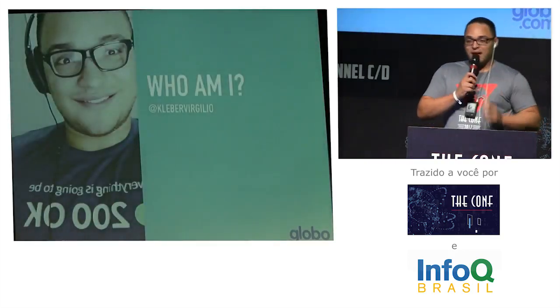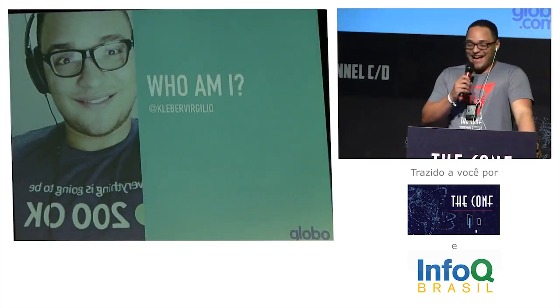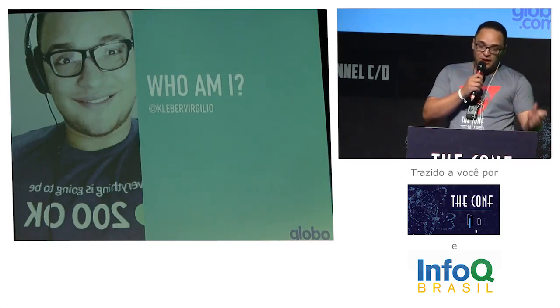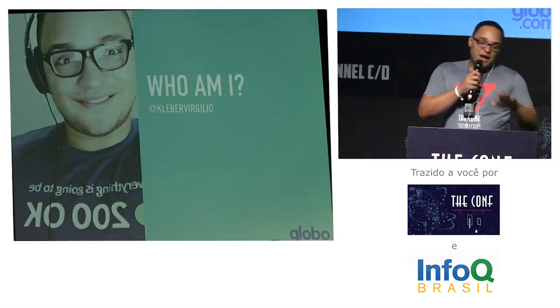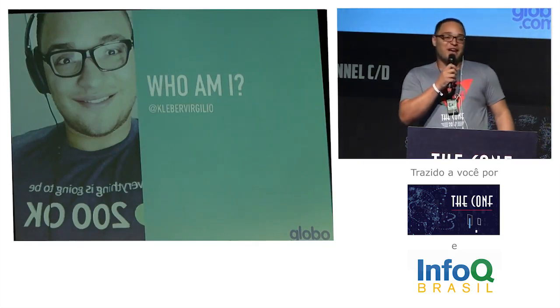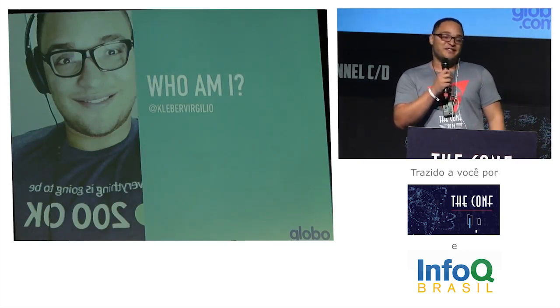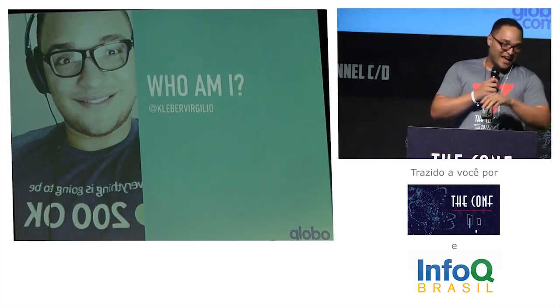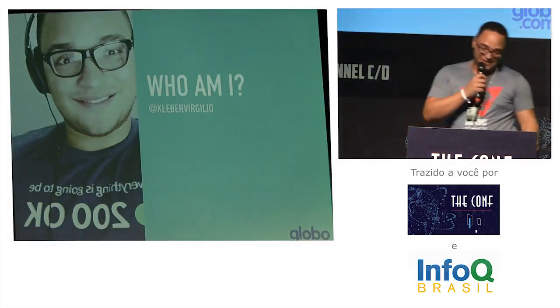A little bit about me. Who am I? My name is Kleber. You can find me on social networks as Kleber Virgilio — GitHub and Twitter. I work for Globe.com. It's a great place to work. If you're looking for a job and a cool challenge, we have plenty for you. Just come talk to us. We have a gang here, and also pretty cool gifts — let's talk.